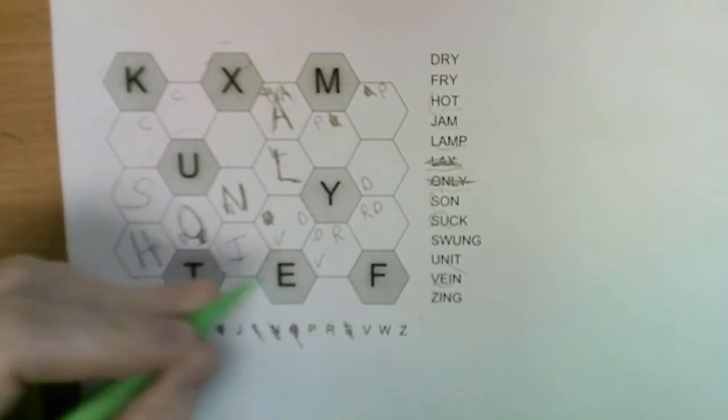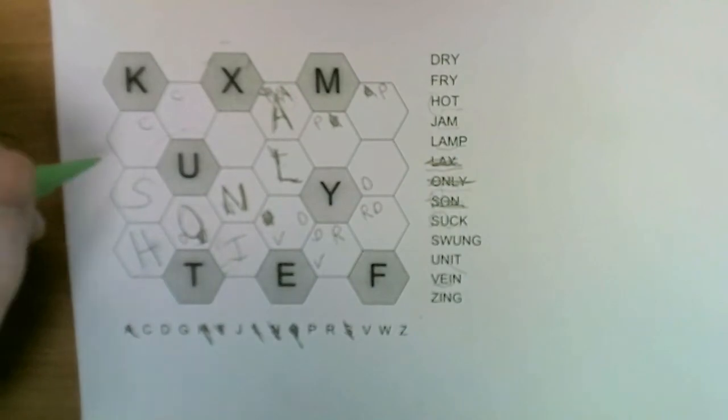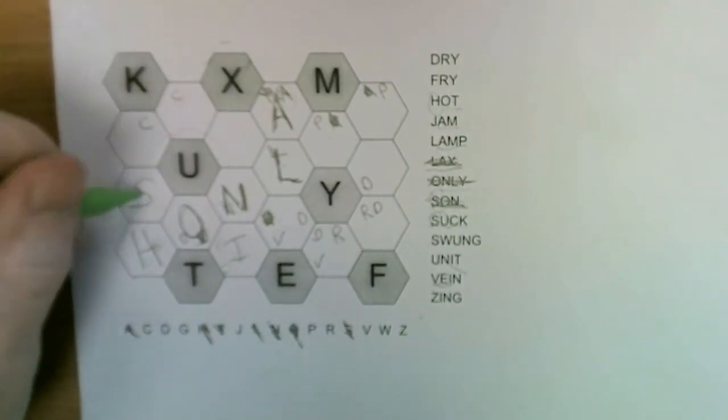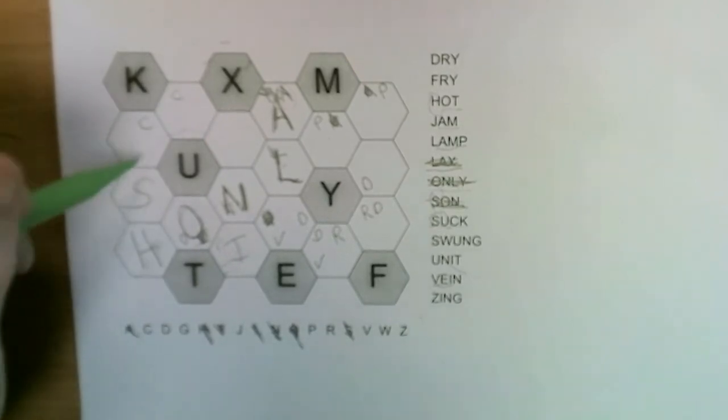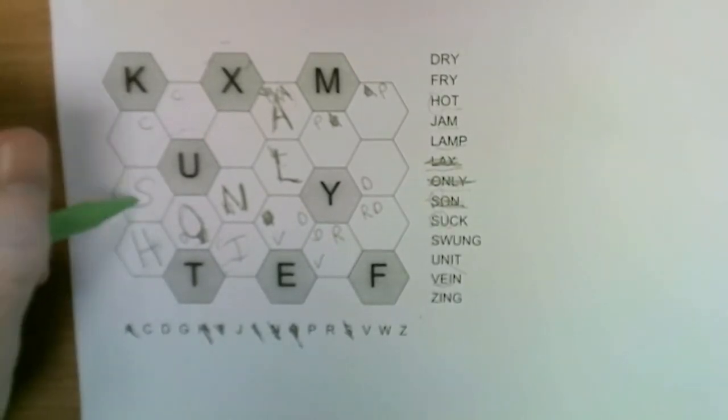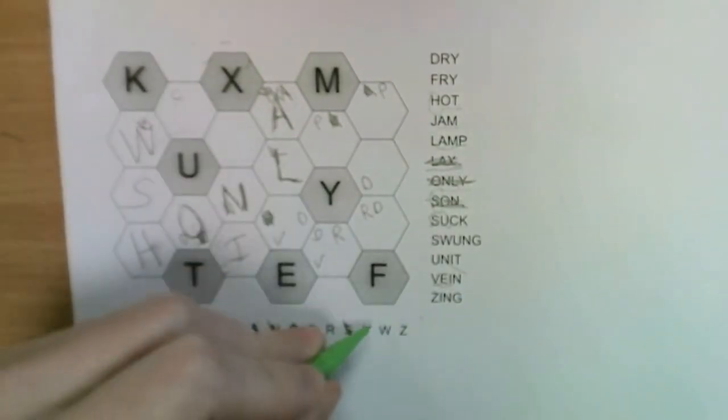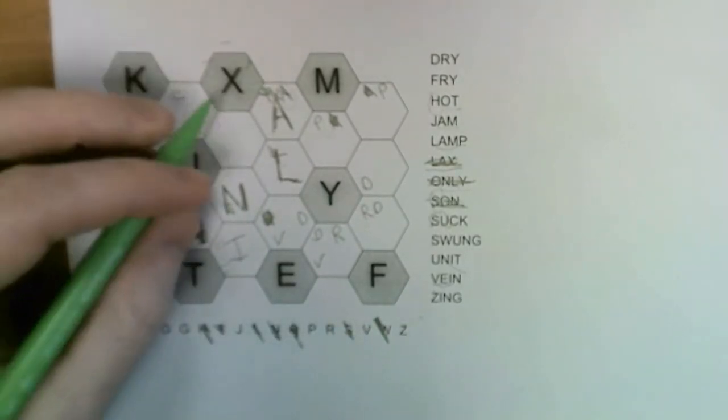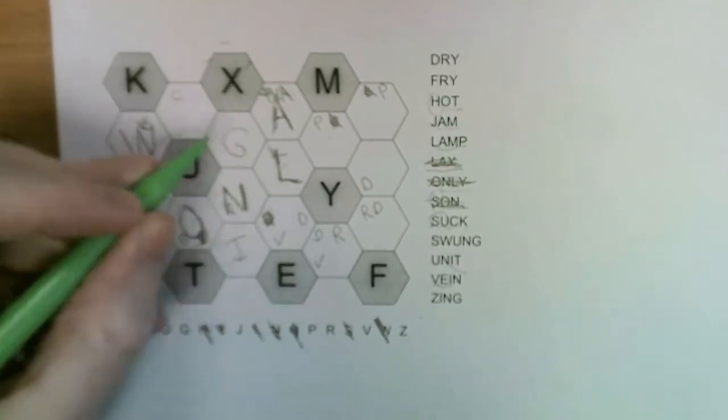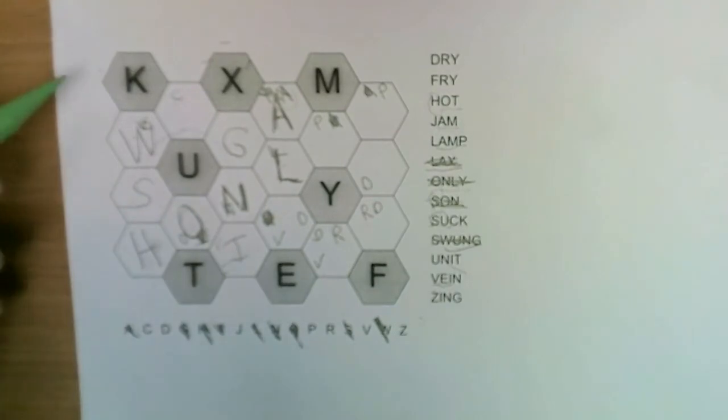We now have sun and suck. For swan, S-W-A-N, there's only one possible option for W because S only has one available empty neighbor. So that's our W placed. This has to be the G to make swan.